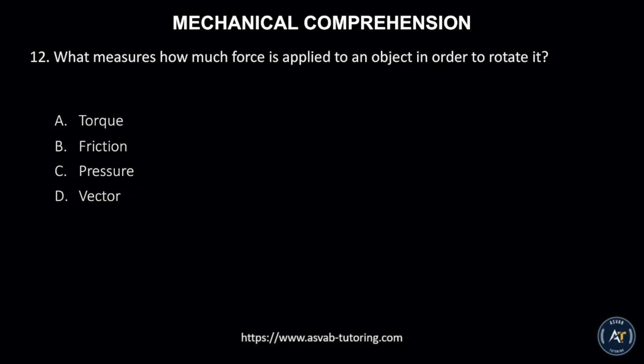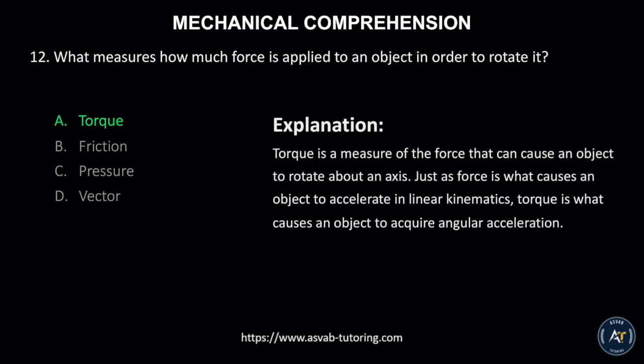Number 12. What measures how much force is applied to an object in order to rotate it? A. Torque, B. Friction, C. Pressure, or D. Vector? The correct answer is A. Torque. Torque is a measure of the force that can cause an object to rotate about an axis. Just as force is what causes an object to accelerate in linear kinematics, torque is what causes an object to acquire angular acceleration.